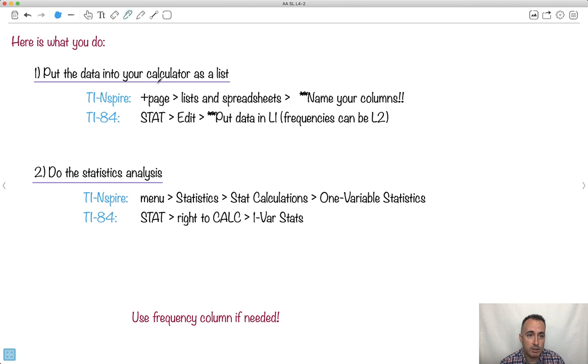So like put it in, do some math. If you use a TI Inspire, you add a page, you go list and spreadsheets, and you have to name your columns. What I mean by that is that, for example, let me do it maybe in purple here, so I might have like X, and I might have like the frequency. So then I'll have all my X values here, and my frequencies here, or maybe I've just got X's, so it'll just be X, it'll just be a whole bunch of these like this. That's how I would do it on my TI Inspire.